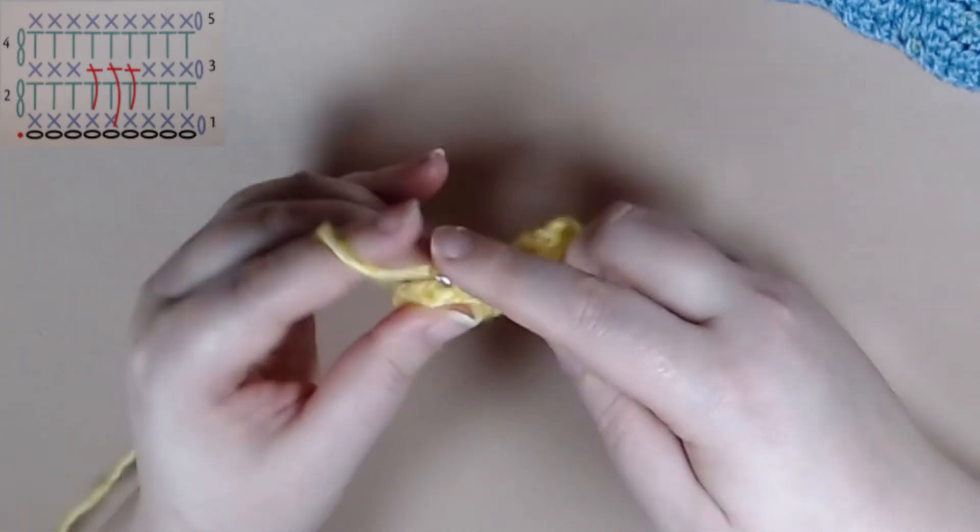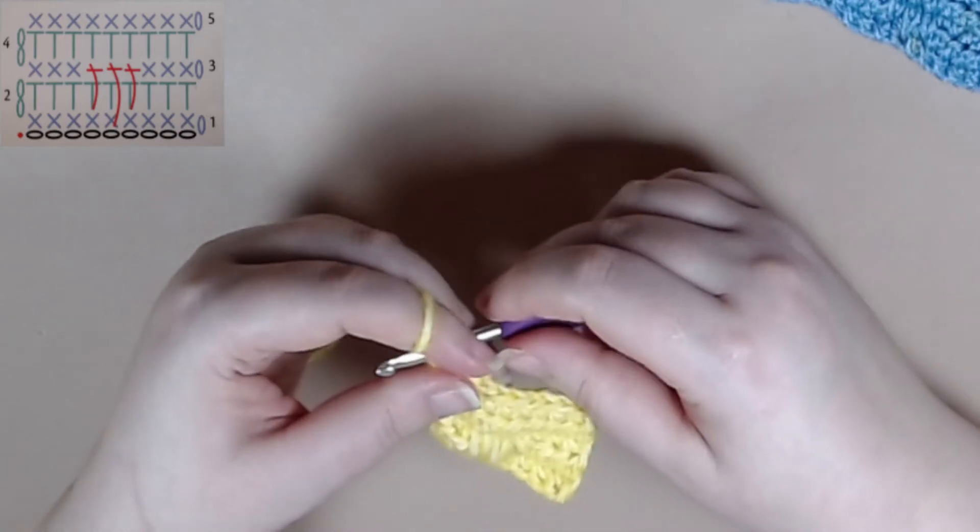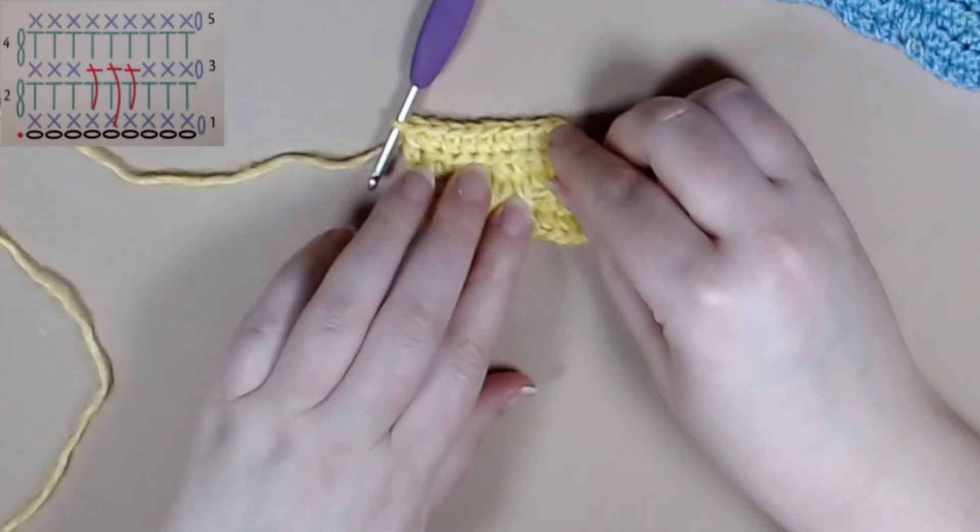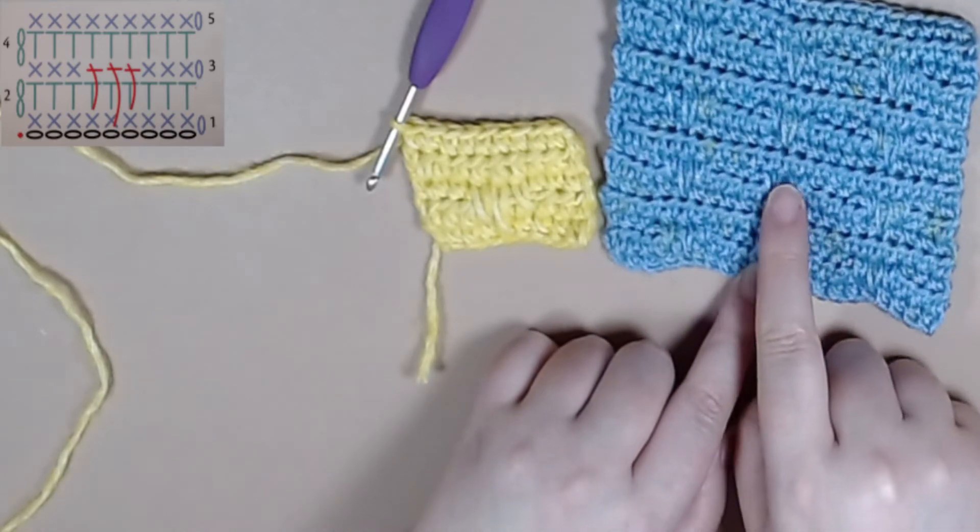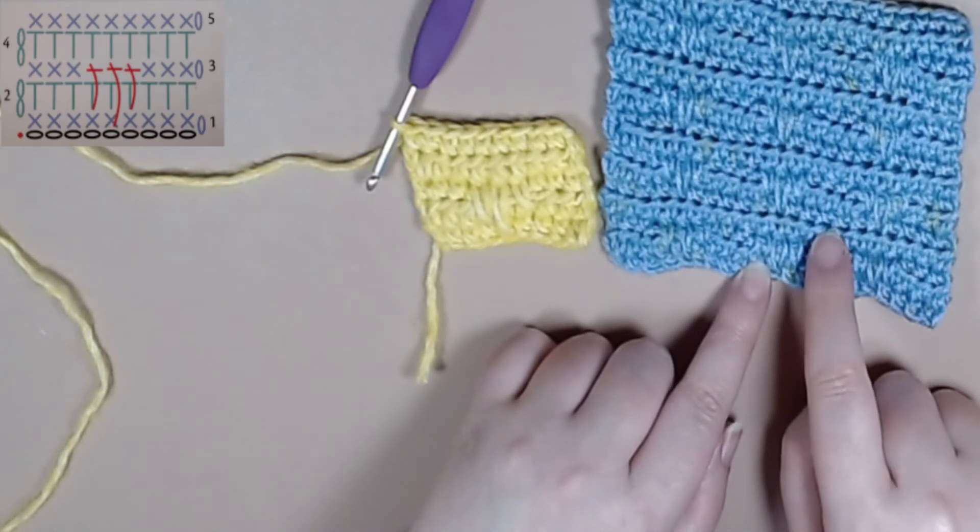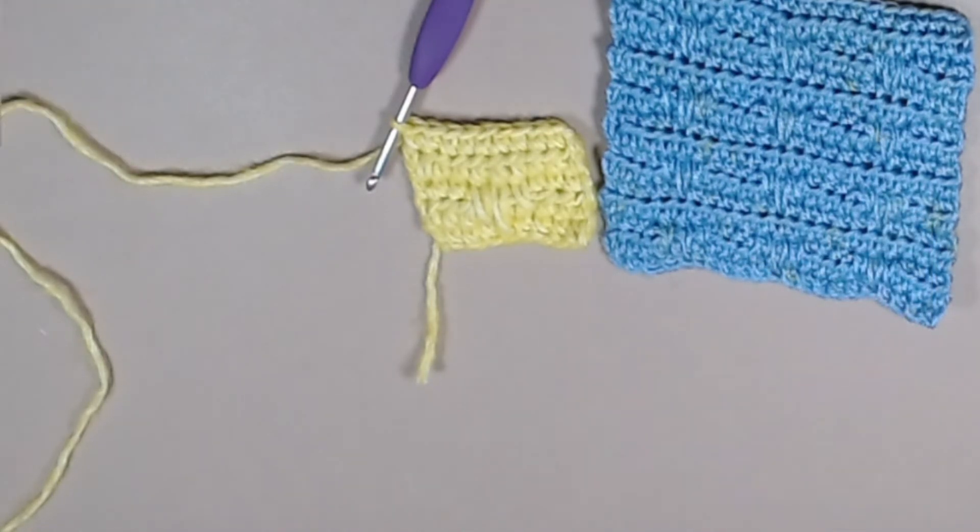Once you get the hang of this is actually really fun and super exciting with how it ends up turning out. So you'll see from this how everything ends up lining up almost perfectly. And this is how you do the group threes crochet stitch pattern.